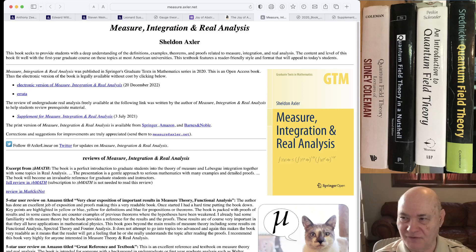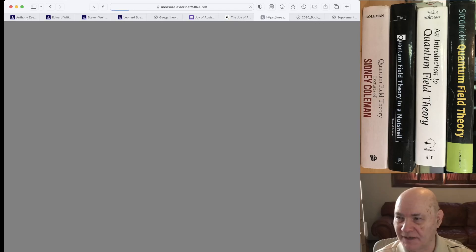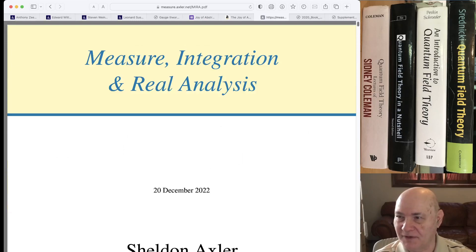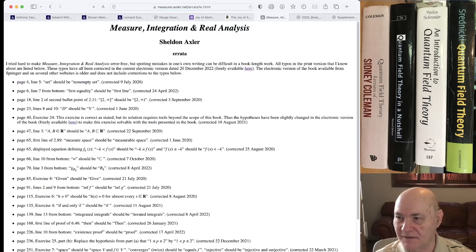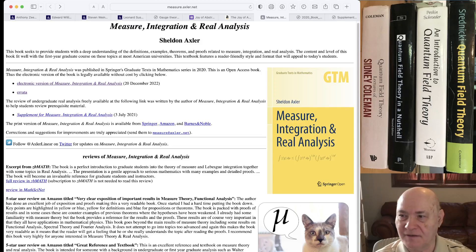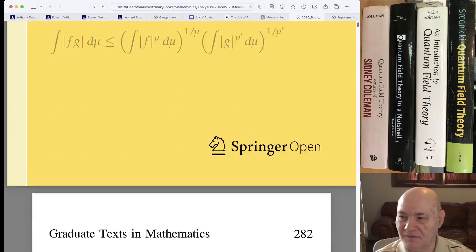But anyway, this book, which is available for free, it's one of these open source texts, so you just go to the link and you can download the electronic version for free. It's a nice book. Sheldon Axler wrote the book, you can get the errata and everything. Sheldon Axler wrote Linear Algebra Done Right. He's written some other books. He's a very good writer and mathematician. And this is sort of like, rather than reading Rudin's books on real analysis, for a physicist, this is a much easier read.